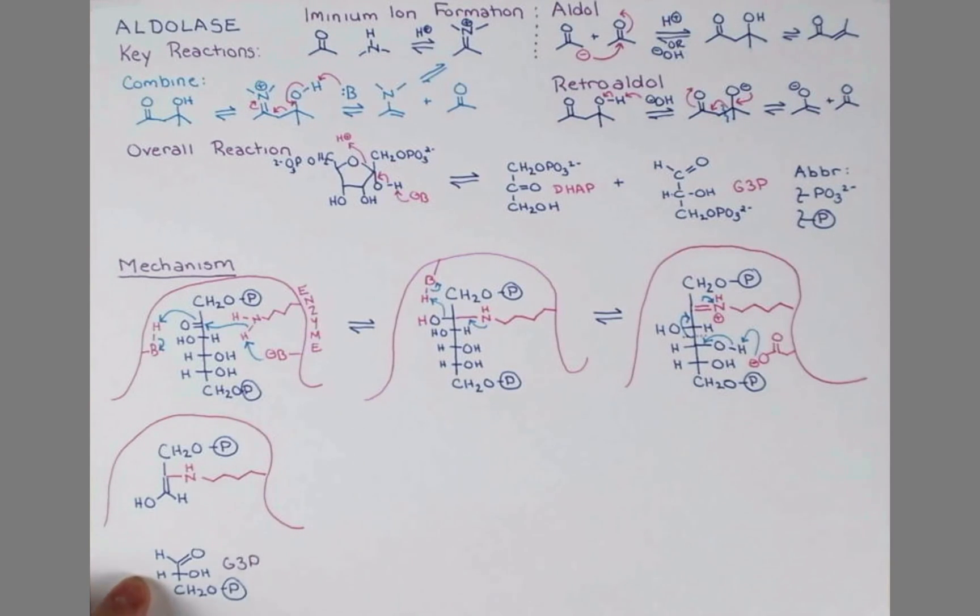So we've made one of our products, and the other product is still bound to the enzyme, so we need to get it off of there. First, I do want to show you that this has resonance. If we push the lone pair on nitrogen again, so that we make a double bond, we can show these electrons move on to carbon, giving us an anion on that carbon.